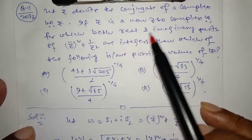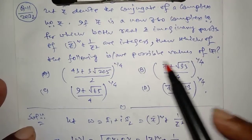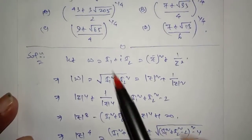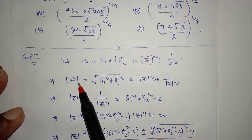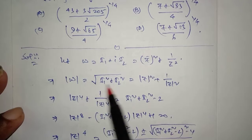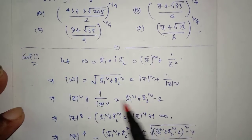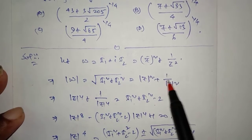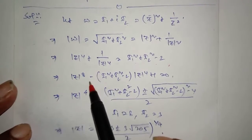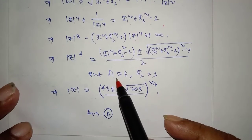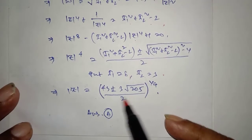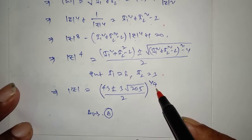Question 9 (complex numbers): Suppose we consider integer representation with I₁ + I₂ = ω. Finding the magnitude: squaring gives I₁² + I₂² with cross terms. Setting up a quadratic in j⁴ and applying the quadratic formula. Putting I₁ = −6 and I₂ = 3, we get specific values. Then |z| to the power 1/4 gives the correct option.